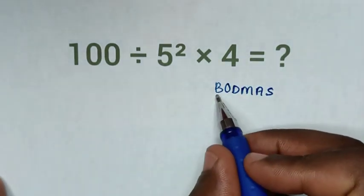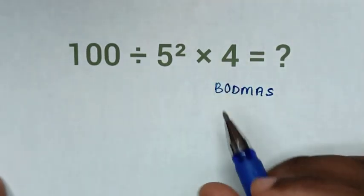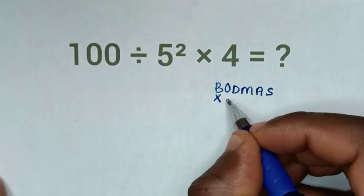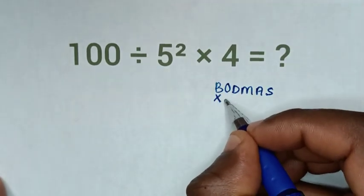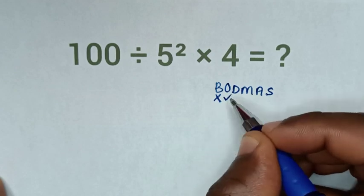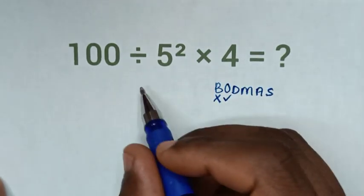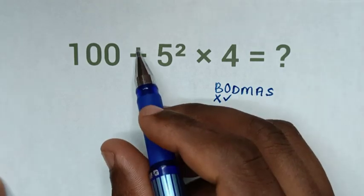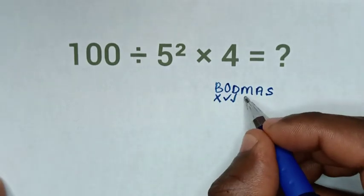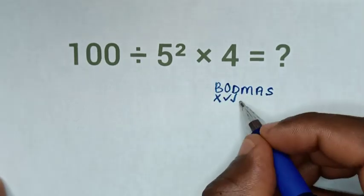Whereas B is bracket, in this problem we don't have bracket. O is order, we have order which is 5 square. And D is division, whereas we have here division.